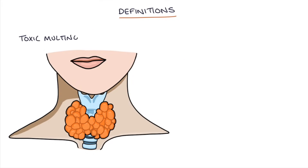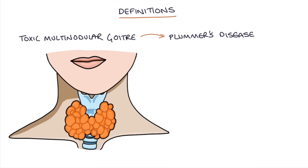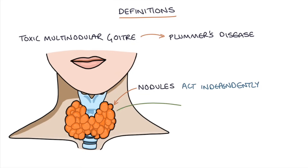Toxic multinodular goiter, also known as Plummer's disease, is a condition where nodules develop in the thyroid gland. These nodules act independently from the normal feedback system and continuously produce excessive thyroid hormone.